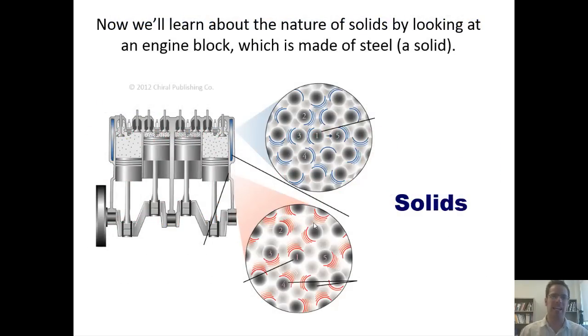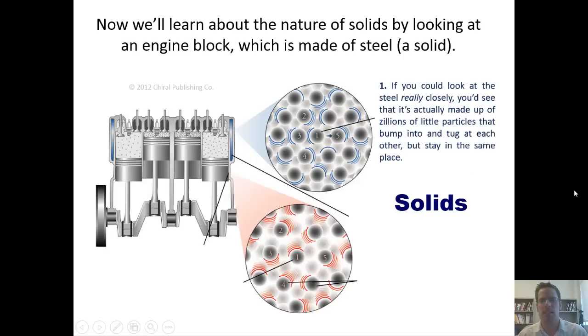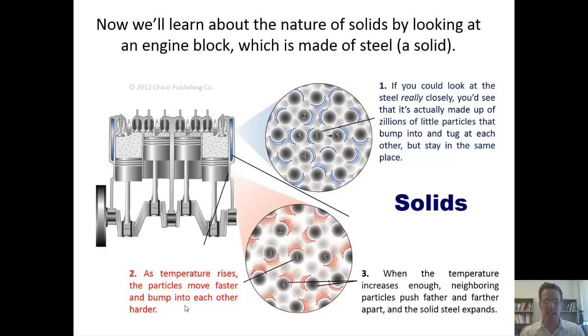We'll now learn about the nature of solids by looking at an engine block, which is made of steel, which happens to be a solid. If you're able to zoom in really closely to the engine block substance, the steel here, and look at the individual particles that comprise the steel, you'd see that it's actually made up of zillions of tiny particles that are all bumping and tugging and wiggling around each other, but ultimately stay in the same place on a macroscopic view. Furthermore, as the temperature rises, you'd be able to see that the particles move faster and faster and bump into each other more and more. In fact, if the temperature increases enough, neighboring particles push further and further apart and the solid steel actually expands. And believe it or not, that does happen with engine blocks. If they get too exceedingly hot, they can actually expand and ruin the engine.